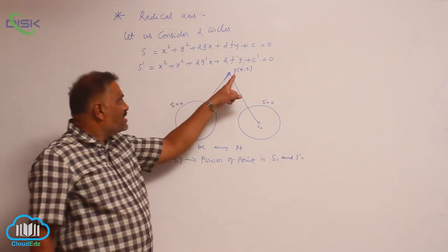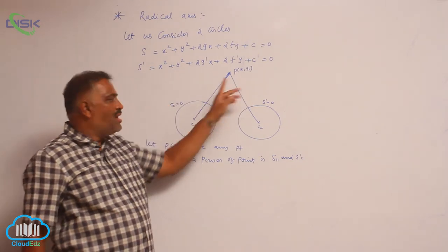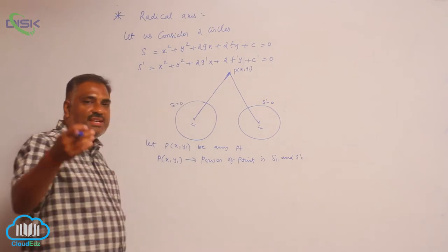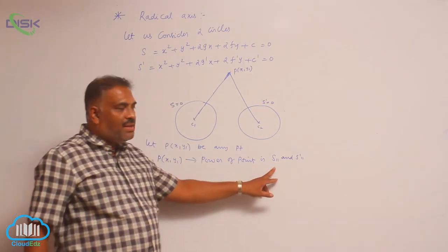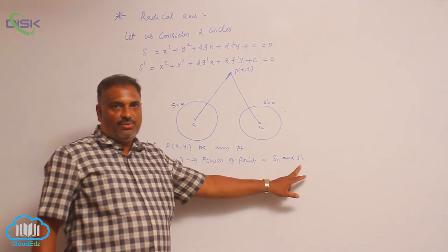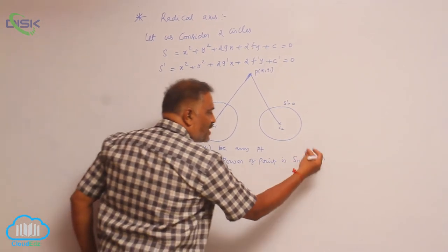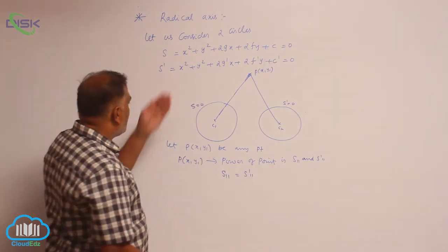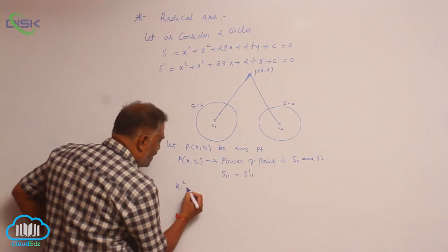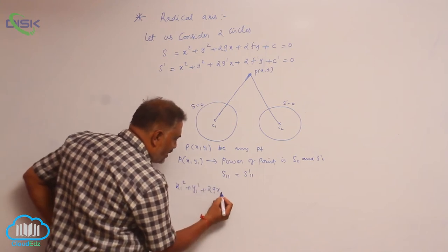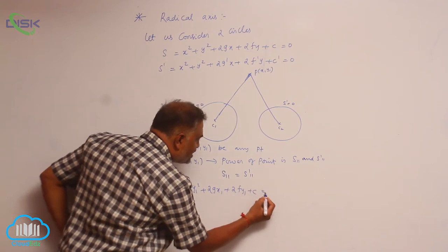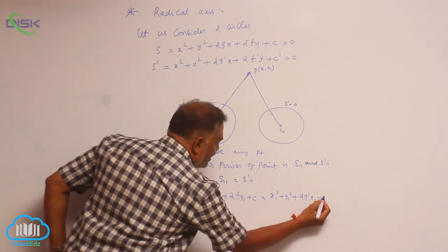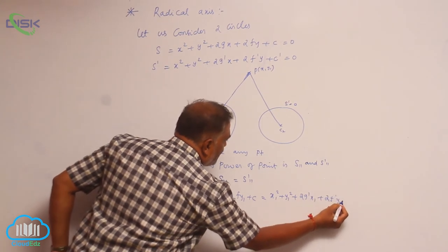Now, if the powers of the point P(x₁, y₁) with respect to the two circles are equal — that means S₁₁ = S'₁₁ — then substituting values: x₁² + y₁² + 2gx₁ + 2fy₁ + c = x₁² + y₁² + 2g'x₁ + 2f'y₁ + c'.